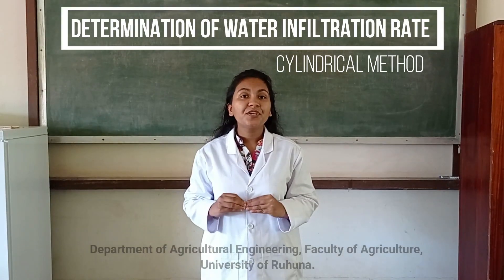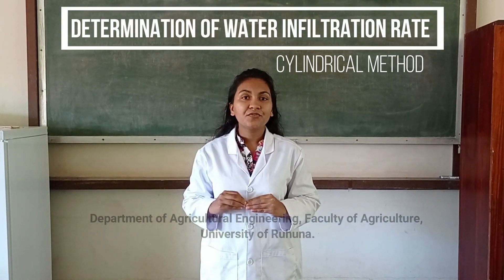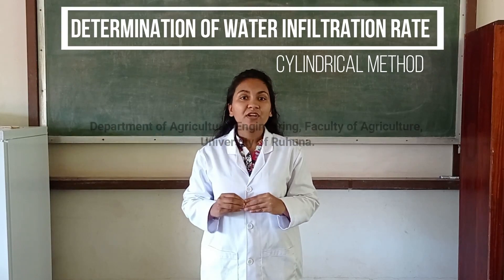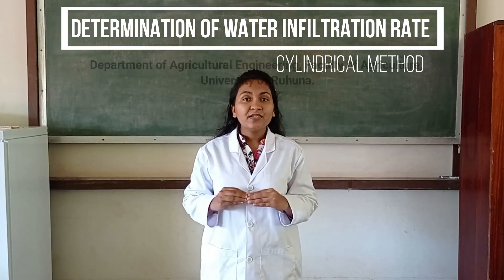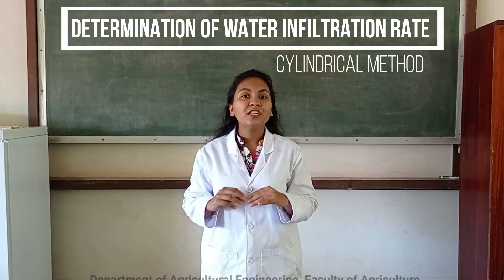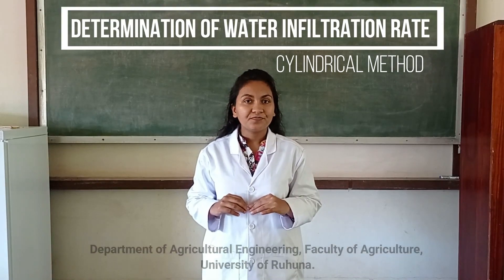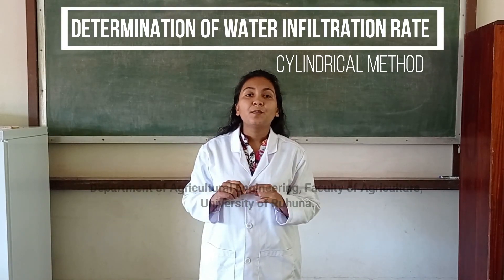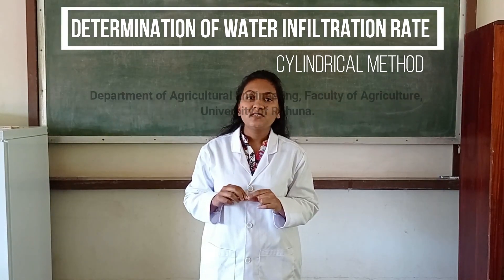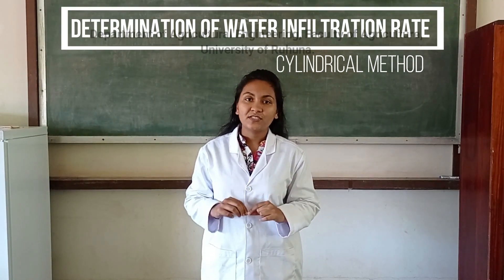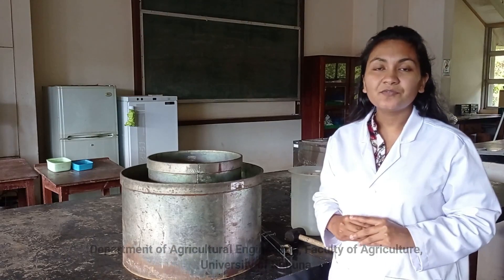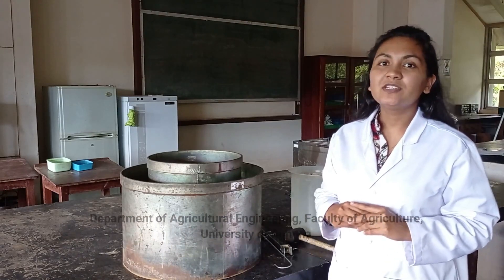The most common method of measuring infiltration rate is a field test using a double ring infiltrometer. The rings are partially inserted into the soil and filled with water. The outer ring creates a buffer zone around the inner ring and limits the lateral movement of water. Let's see what materials and equipment we need for this practical.